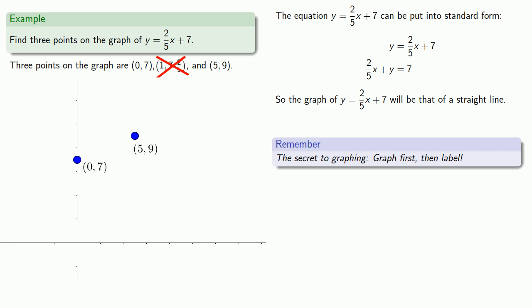And, since we know that this is the graph of a straight line, we'll draw the line. And, guess what? We'll label it. We'll put down the equation of the line.